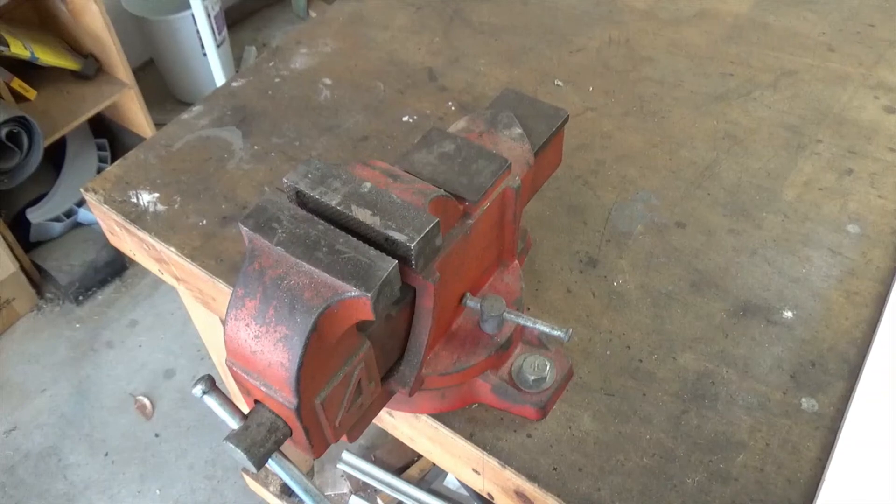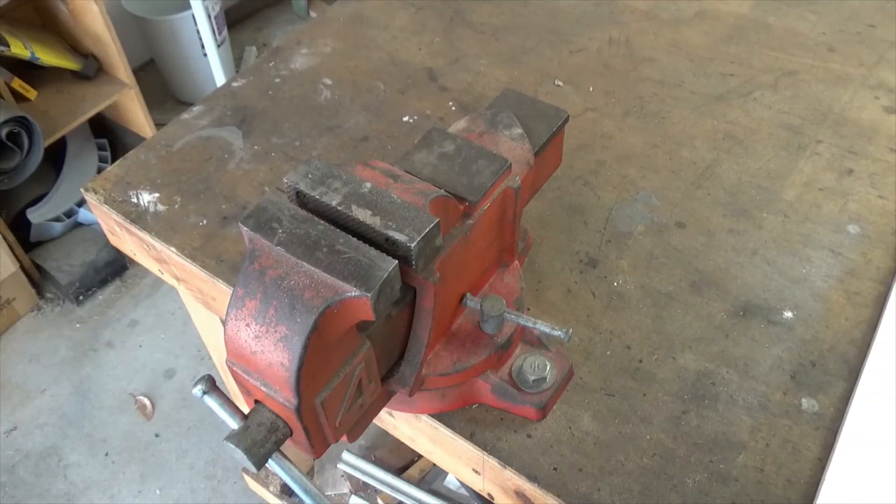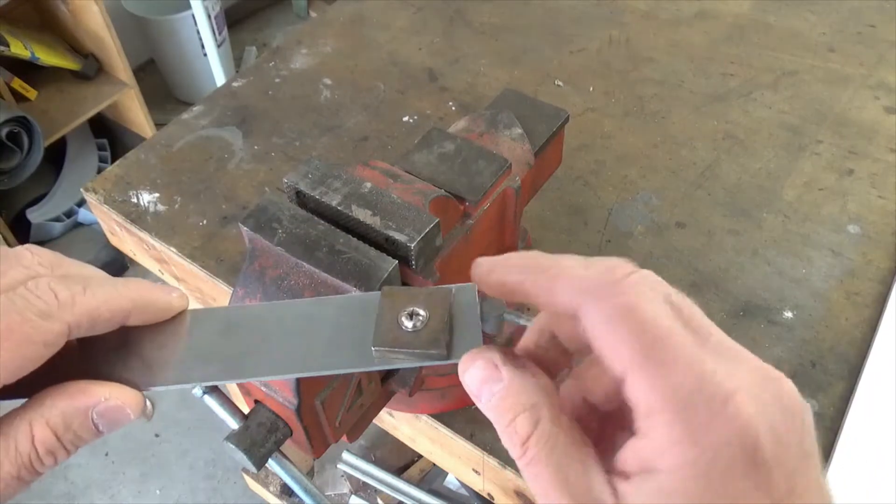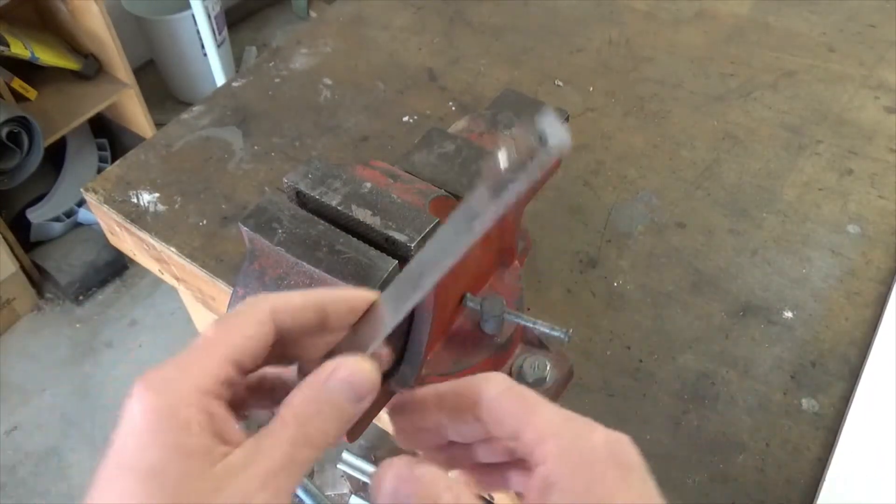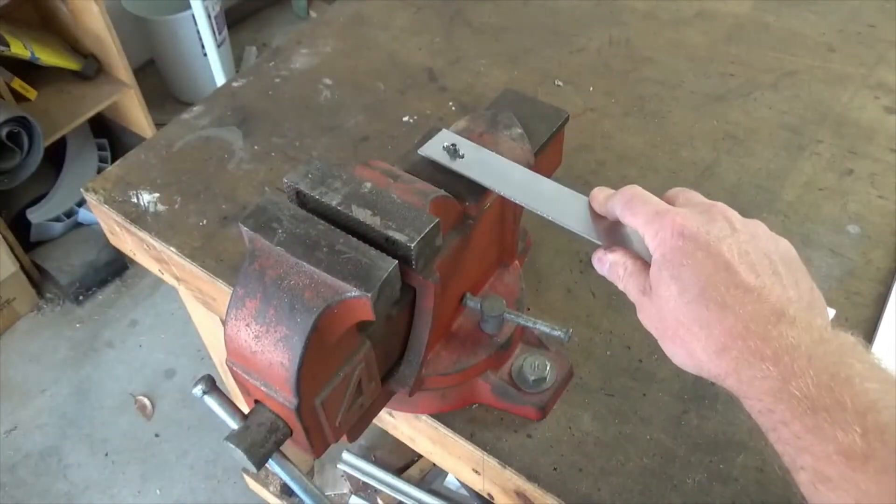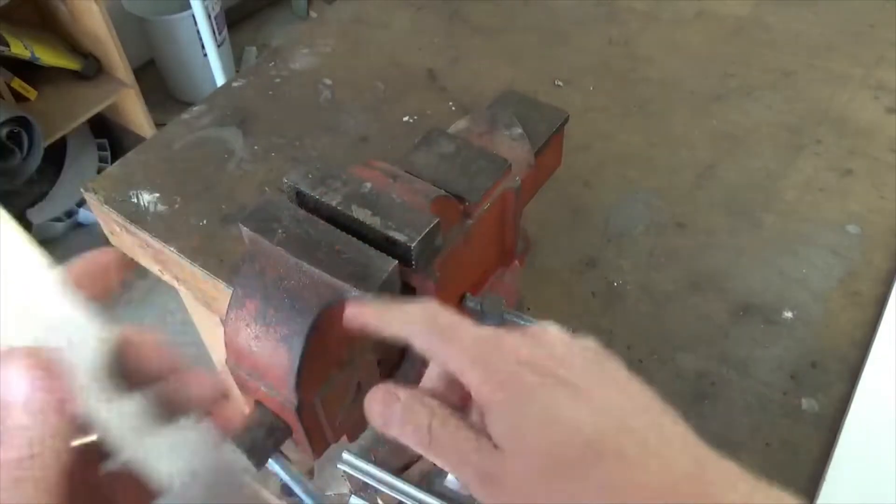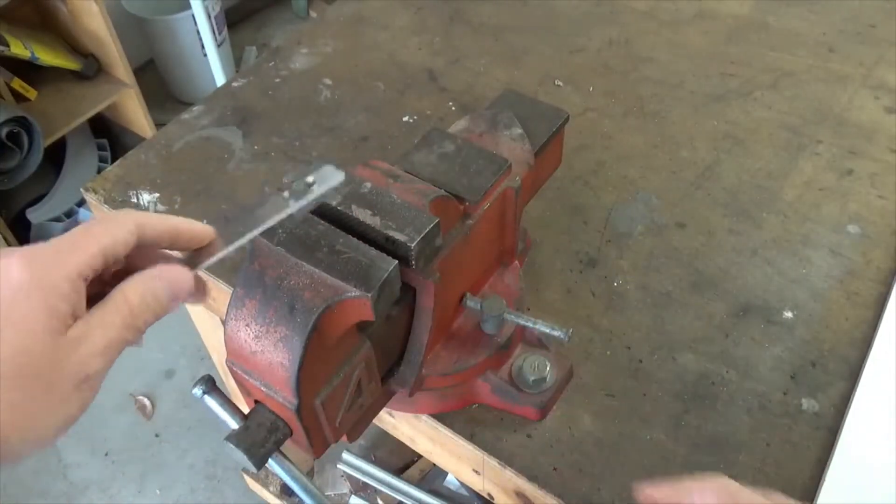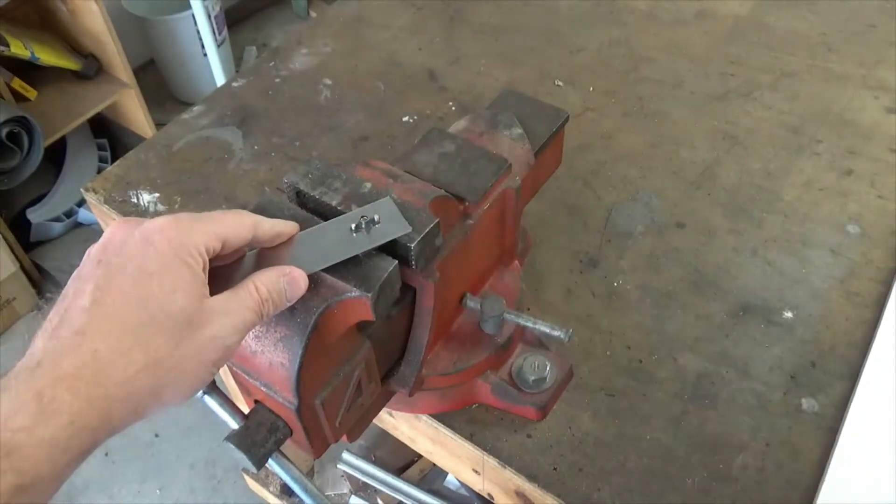So here we are with my slightly agricultural bench vice, but it'll do the job in this instance. So like I said, if you have a countersunk screw or bolt in there, then you could actually use the anvil of the bench vice to sit it flat on there. But seeing as this is proud, I just crack the jaws slightly and you can rest it on there like that.